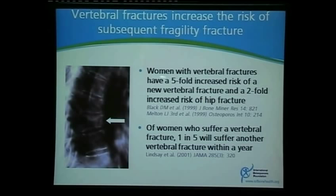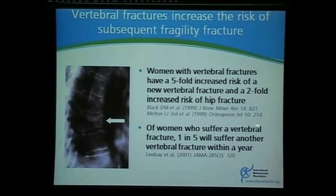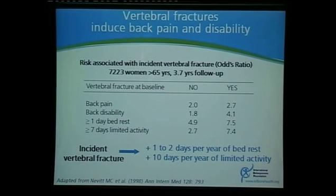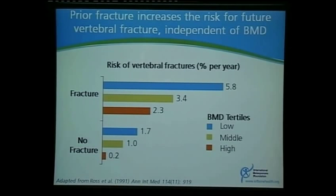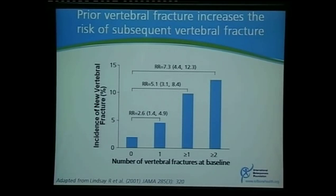Once a patient gets one fracture, women with vertebral fractures have a five-fold increased risk of a new vertebral fracture and a two-fold increased risk of a hip fracture. A woman who suffers a vertebral fracture has a 20% chance of having another fracture within one year — a serious indicator of diseased bone and high fragility fracture risk. Prior fracture increases the risk of future fractures independent of BMD, so regardless of a patient's BMD, the presence of a fracture tells us that more fractures will happen in the future.